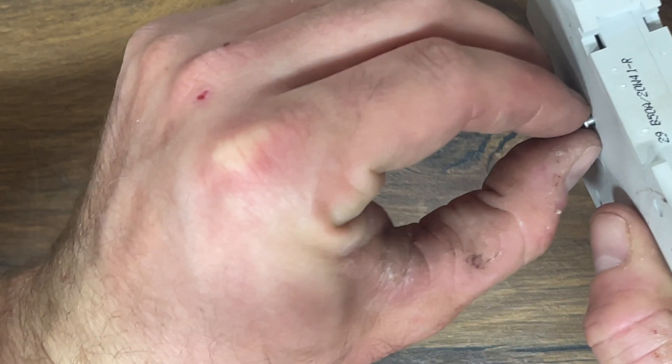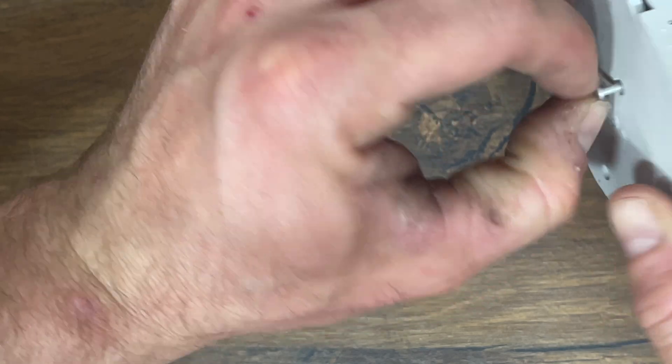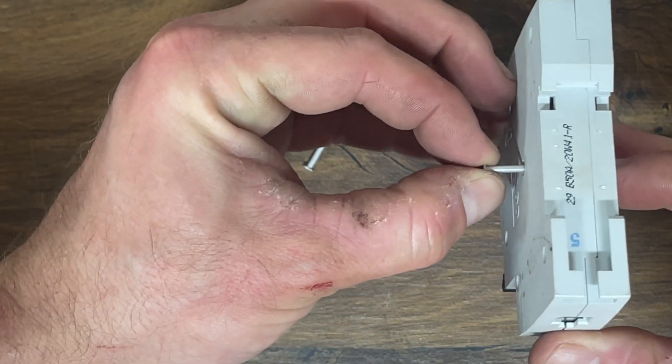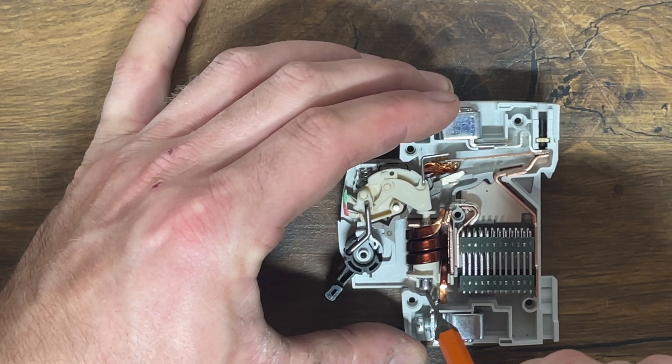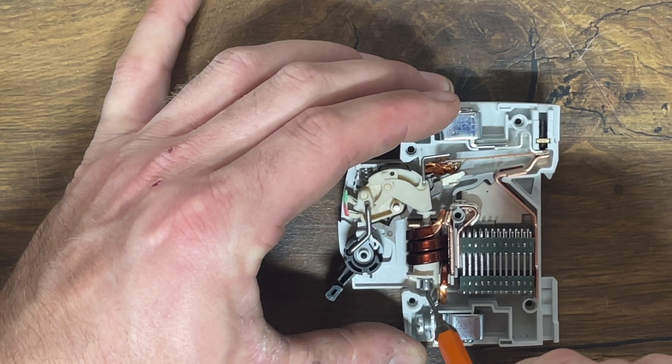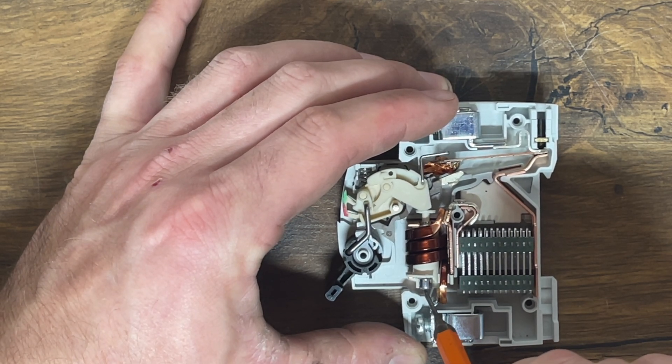Because this current is fairly high, the impulse current of the motor, it causes that MCB to trip quite fast, resulting in the little coil being the part that pushes our connection apart.